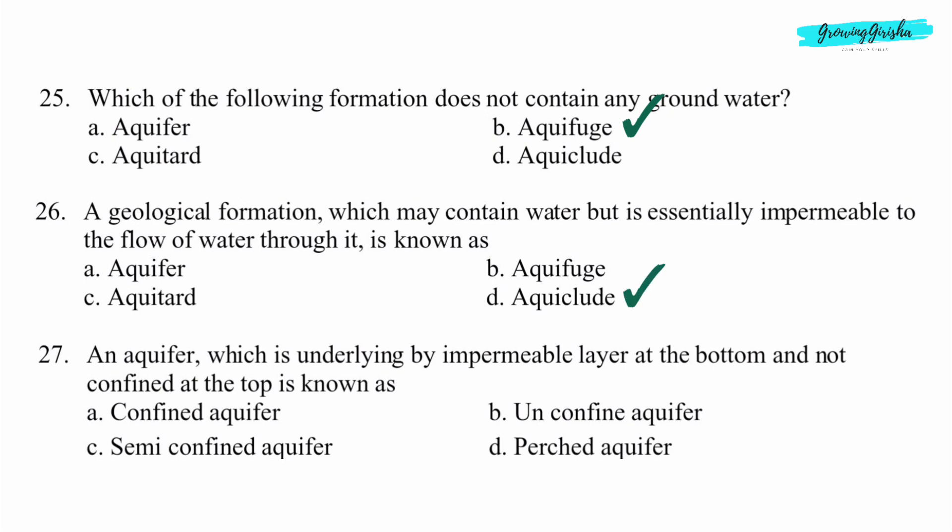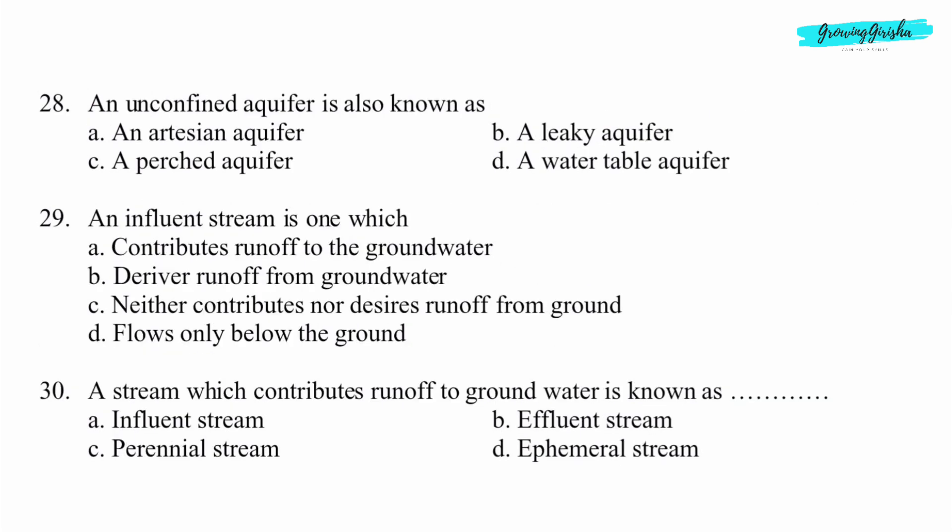Question 27. An aquifer which is underlain by an impermeable layer at the bottom and not confined at the top is known as? Question 28. An unconfined aquifer is also known as? Option D: A water table aquifer.